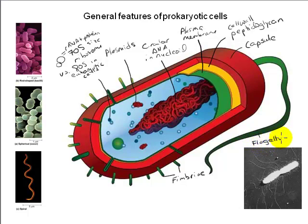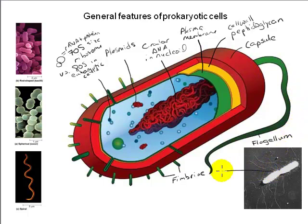Finally, many prokaryotes are capable of locomotion. They swim through their environment propelled by the rotation of one or more flagella — helical tail-like protein complexes connected to membrane-embedded motors that rotate, powered by cellular ATP. You can see both the fimbriae and flagella of Salmonella in the electron micrograph shown here.